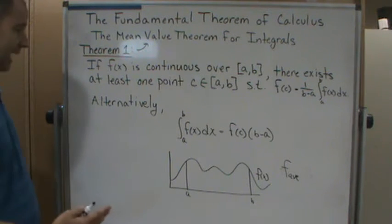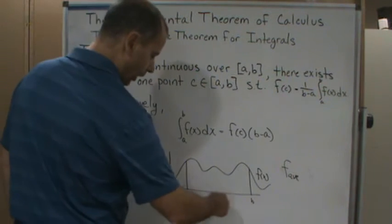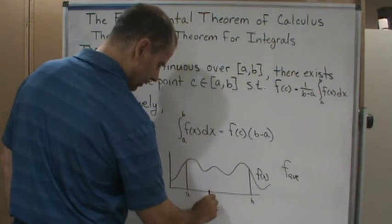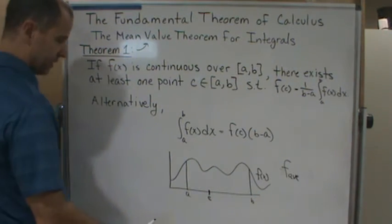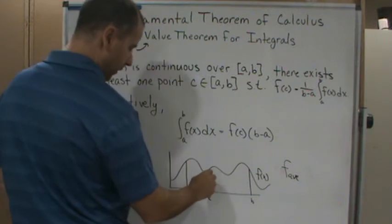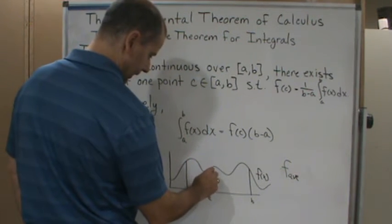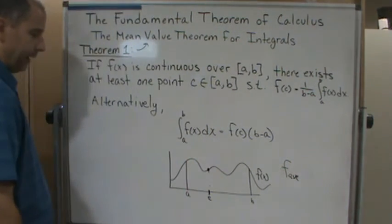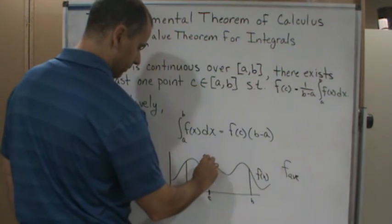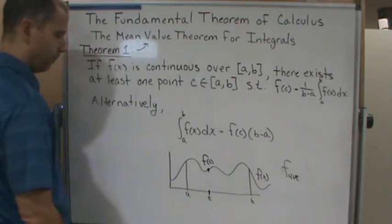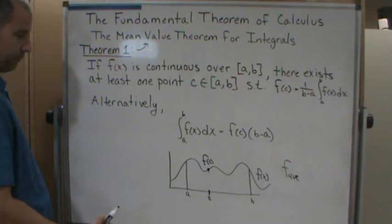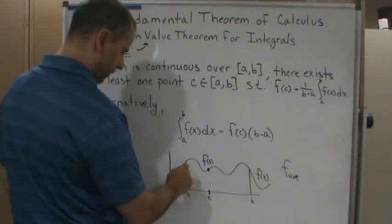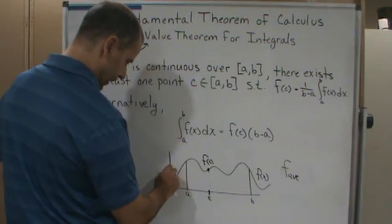What this is saying is that there's going to be at least one c in the closed interval such that the value of the function at c is going to equal the average value of the function, meaning that the average value of the function is this line.